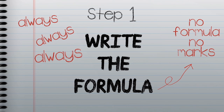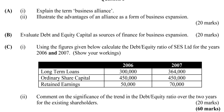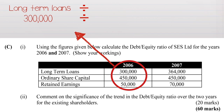The next step is to find each of the numbers from the question. We were asked to work out the debt equity ratio for 2006. The first part of the formula is long-term loans, and the long-term loans are €300,000. We then divide by the ordinary shares plus the retained earnings.